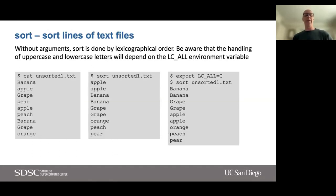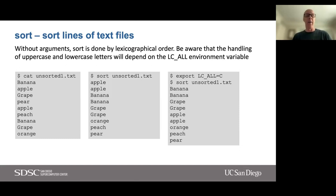Next we have sort, which is one we find ourselves using a lot. You might have sorted files by pasting your data into a spreadsheet and doing it in Excel, but we can also do this programmatically using sort. Without any arguments, sort is done in lexicographical order — basically alphabetical order. Be aware that the handling of upper and lowercase letters depends on your environment variables, in particular LC_ALL. We're going to look at a file called unsorted1.txt with a listing of fruits: Banana with capital B, apple, grape, pear, apple, peach, banana, grape, orange — with some duplication.